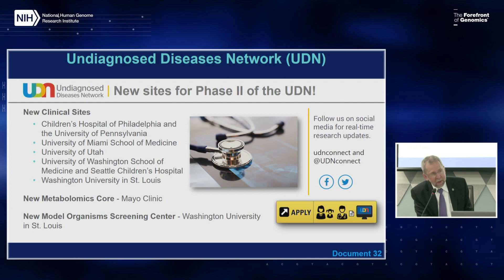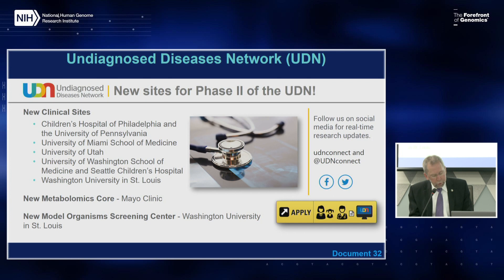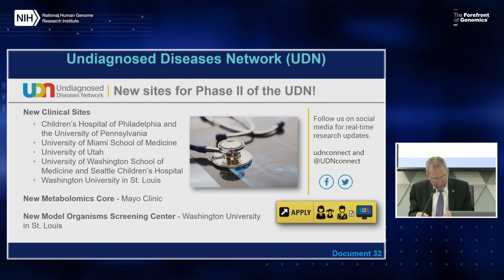The NIH Common Fund's Undiagnosed Diseases Network (UDN) aims to improve the level of diagnosis and care for patients with undiagnosed diseases, facilitate research into the etiology of those diseases, and promote an integrated collaborative community. The UDN is now starting its second phase of Common Fund support. Phase two will significantly expand the footprint of the UDN with five new clinical sites, a new metabolomics core, and increased model organism capabilities. To apply, simply access the UDN gateway at any UDN webpage, and follow UDN on social media using the hashtag UDNConnect.